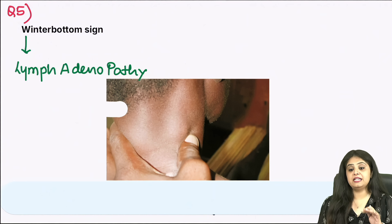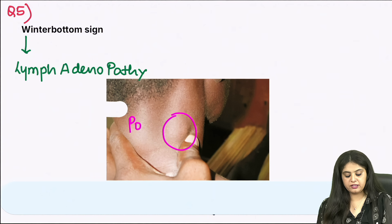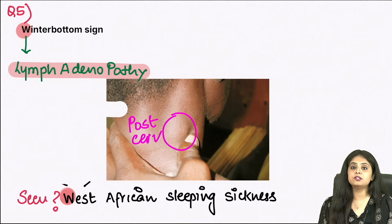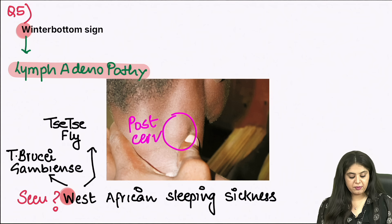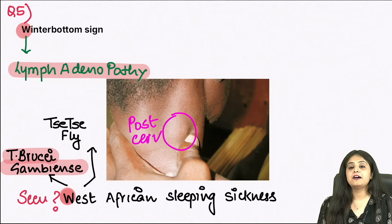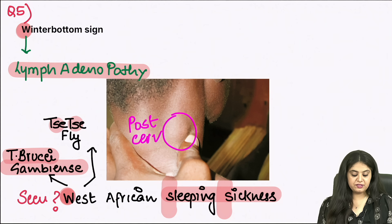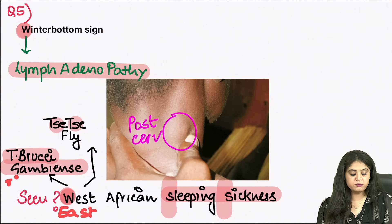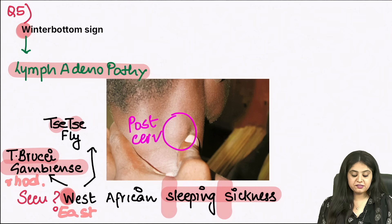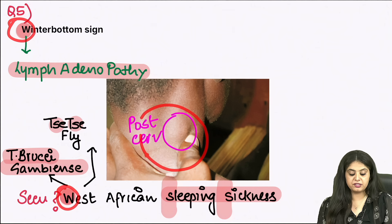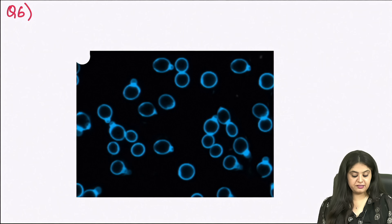Moving on to question 5: this shows a lymph node in the posterior cervical region, also known as the Winterbottom sign. This sign is seen in West African sleeping sickness. It is caused by Trypanosoma brucei gambiense. Both East and West African sleeping sickness are caused by the tsetse fly, but the difference is that East African sleeping sickness is caused by Trypanosoma brucei rhodesiense, while West African sleeping sickness is caused by Trypanosoma brucei gambiense and shows the Winterbottom sign.